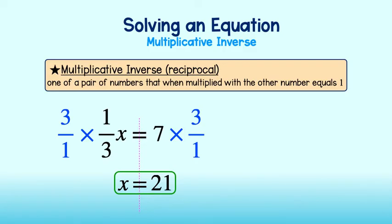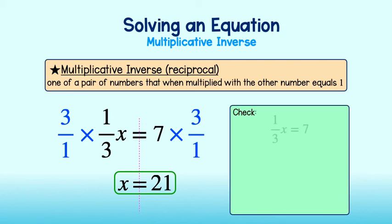To double-check our answer, we can always plug our solution back into our equation. In doing so, we get 1 third times 21 equals 7. Since 1 third times 21 equals 7, we end up with 7 equals 7, which is a true statement, and we've just verified that we got the correct answer.